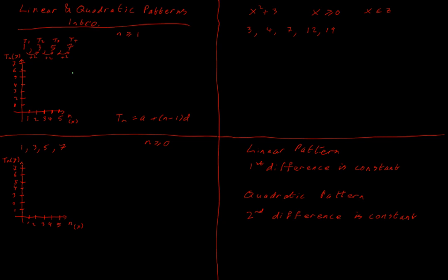That's a basic recap of linear patterns and a reminder of why we call them linear. If we plot the points — at n is 1, tn is 1; at n is 2, tn is 3; at n is 3, tn is 5; at n is 4, tn is 7 — within the accuracy of my sketch, you can see that I end up with a straight line.